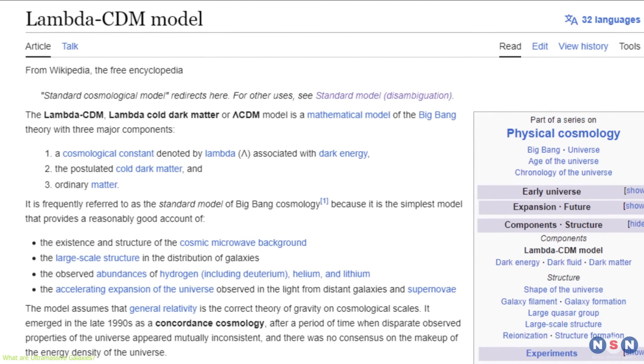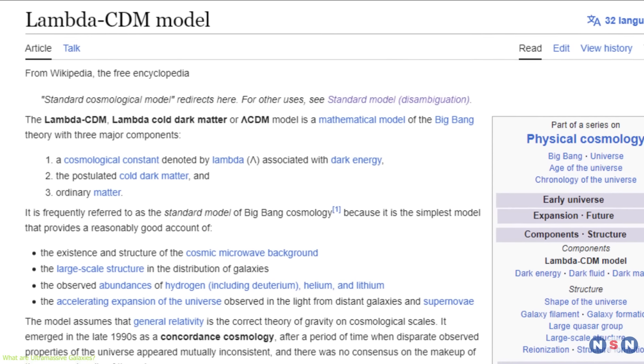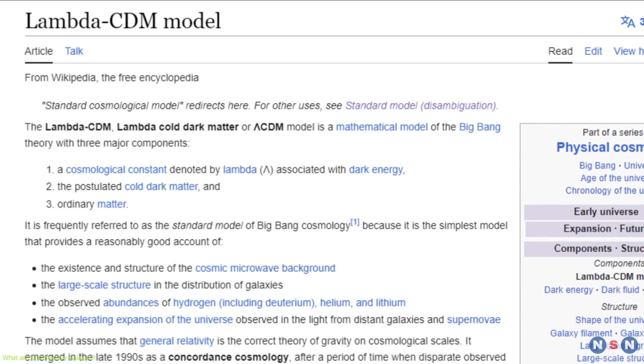According to this model, the universe is composed of about 70% dark energy, 25% dark matter, and 5% ordinary matter.